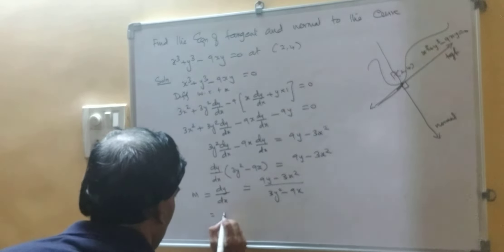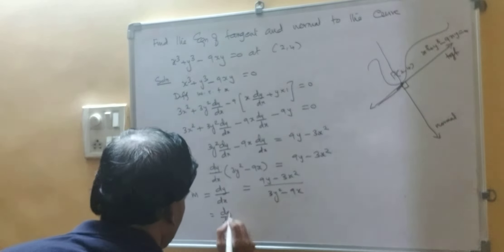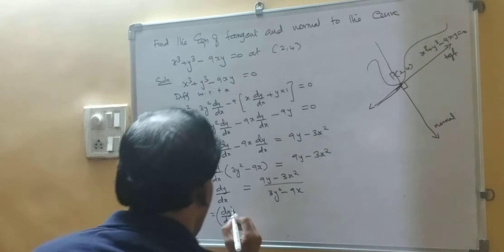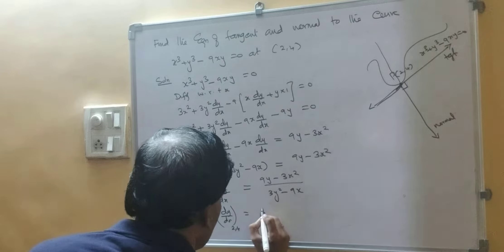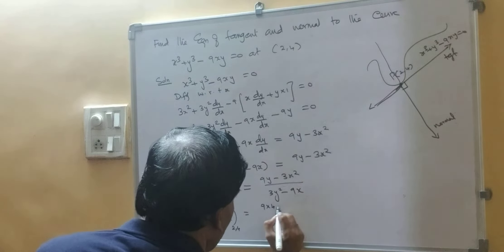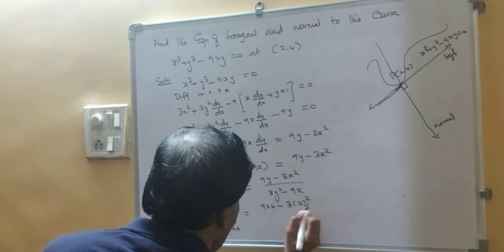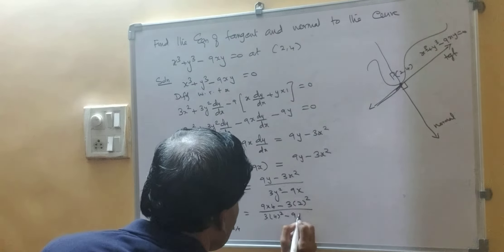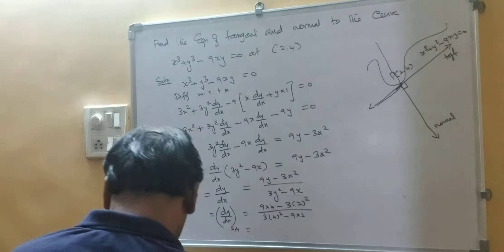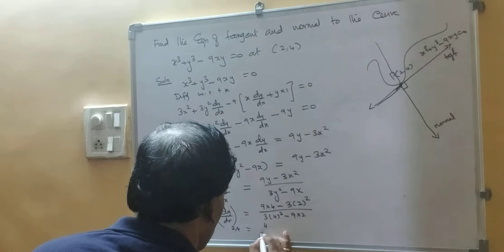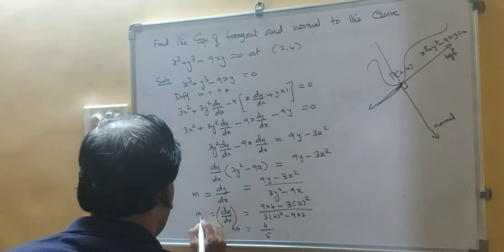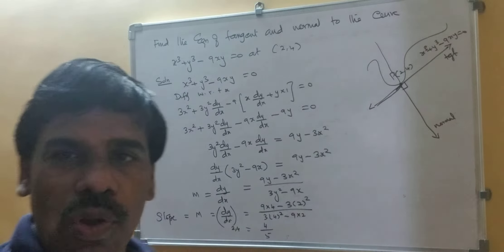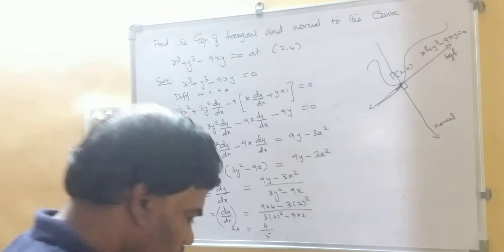We have to find out dy by dx, that is the slope, at the point 2 comma 4. Substituting: 9 into 4 minus 3 into 2 square upon 3 into 4 square minus 9 into 2. If you simplify, you will get 4 upon 5. So we got the slope equal to 4 upon 5.